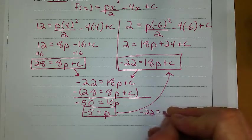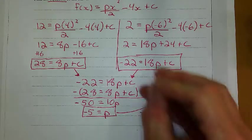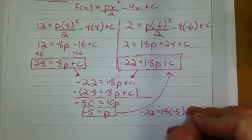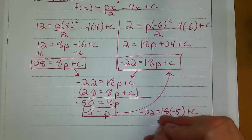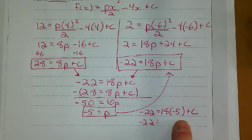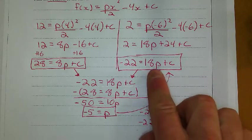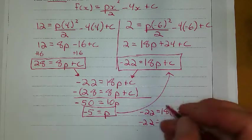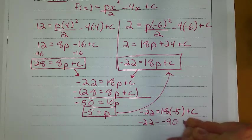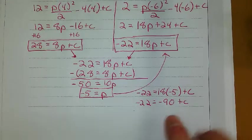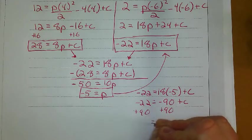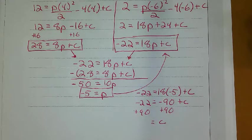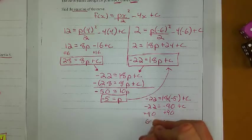Negative 22 equals 18 times negative 5. I just solved that. Plus c. And I'm going to solve for c with that. 18 times negative 5. And I get negative 90 plus c. And then finally add 90 to both sides. And I get my value of c right there. I get a positive 68.